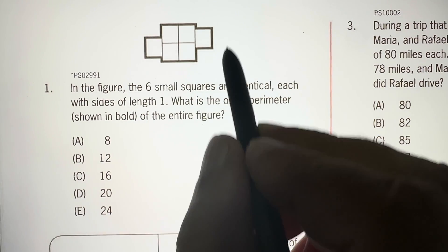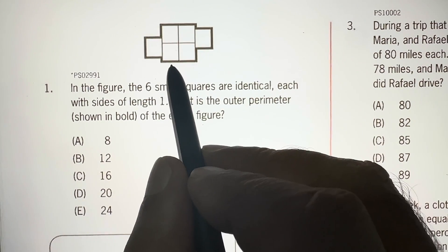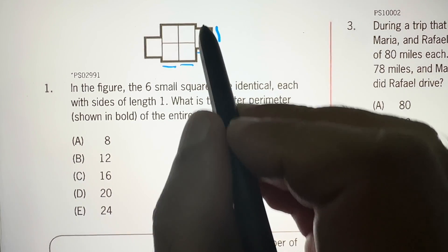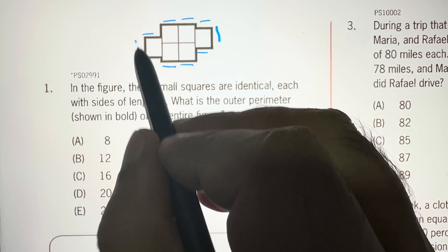So perimeter means the outer boundary. 1, 2, 3, 4, 5, 6, 7, 8, 9,